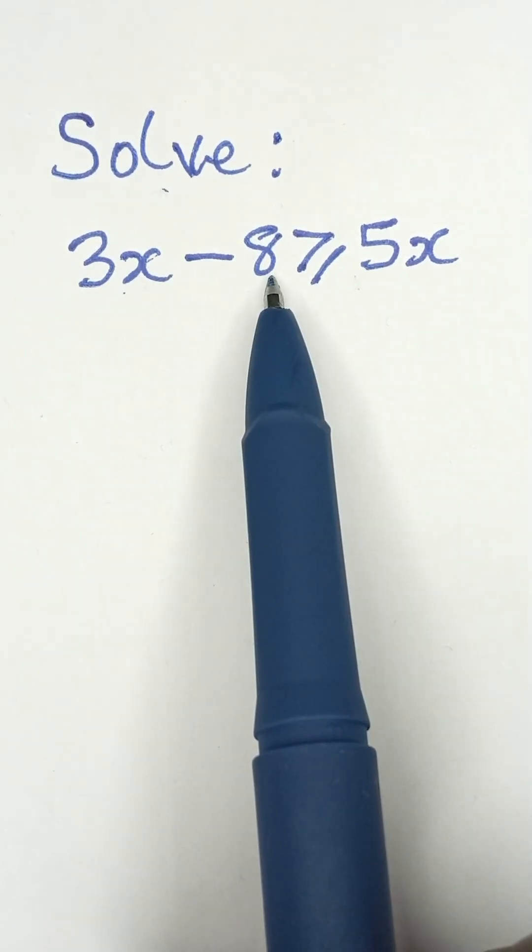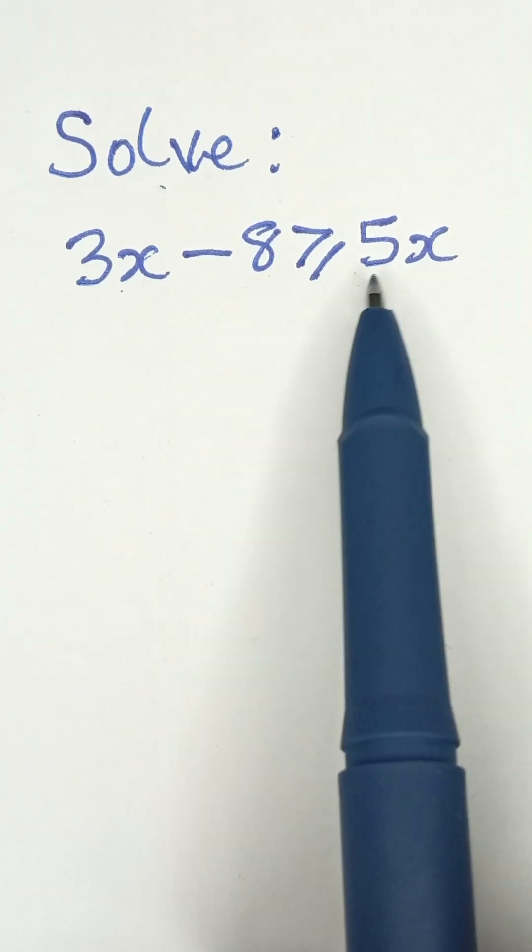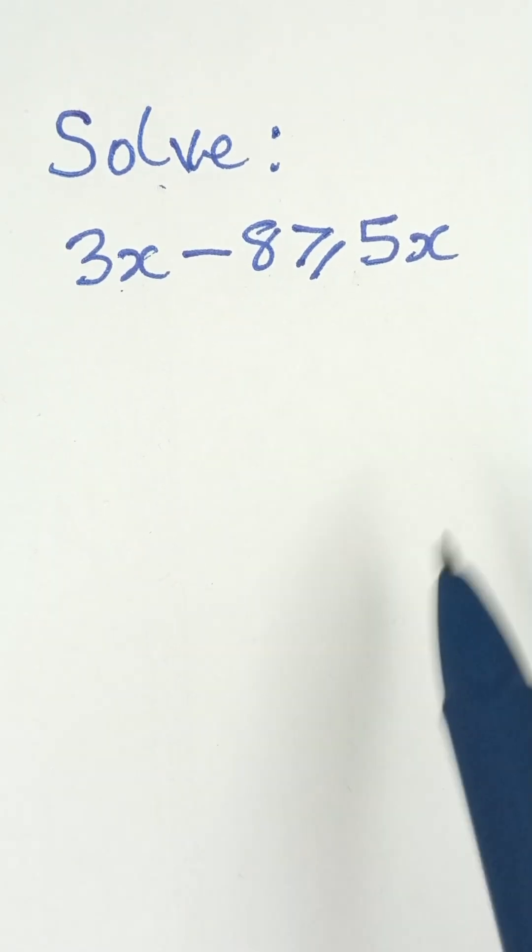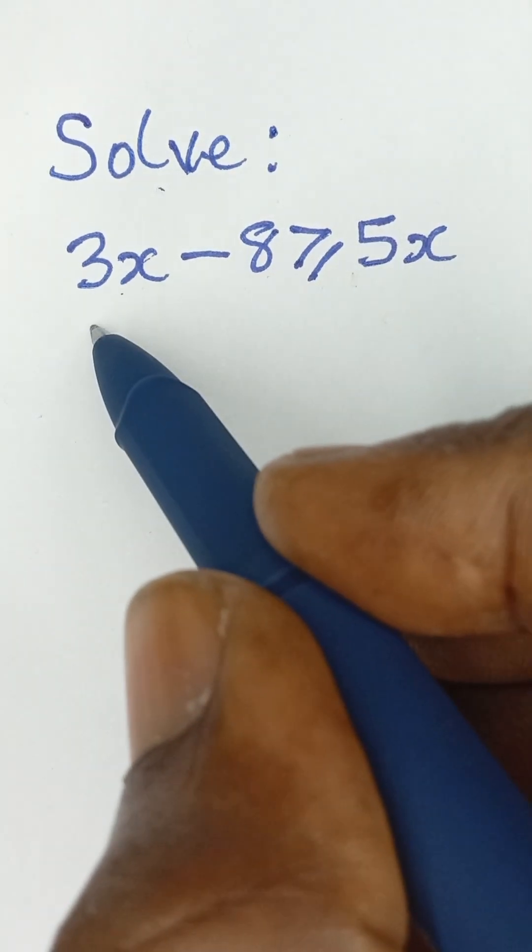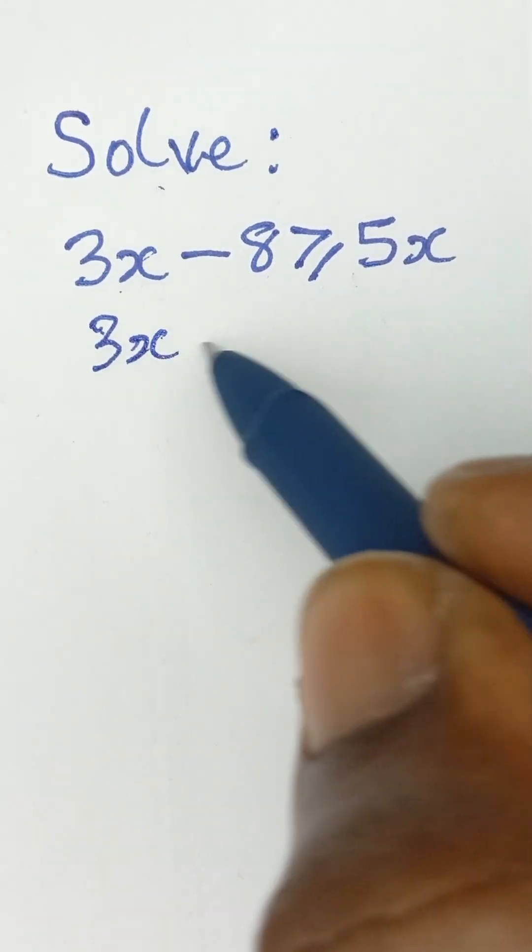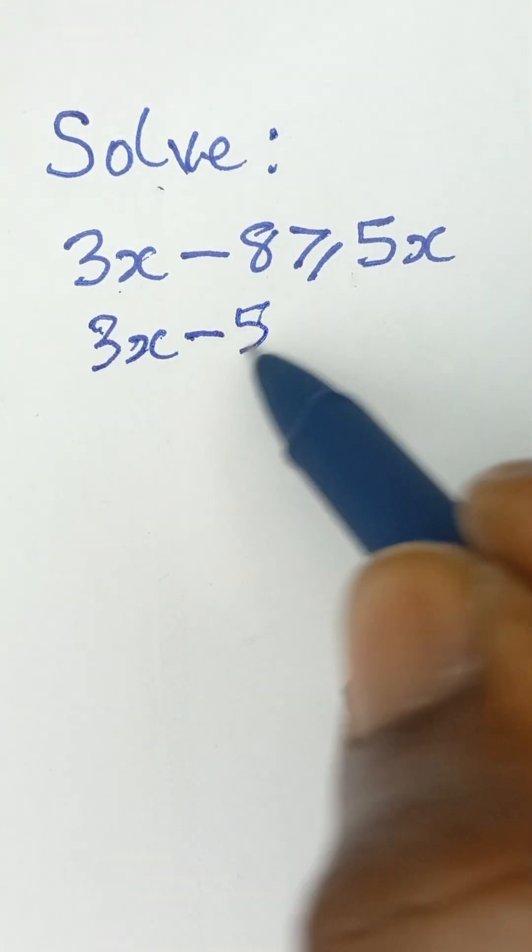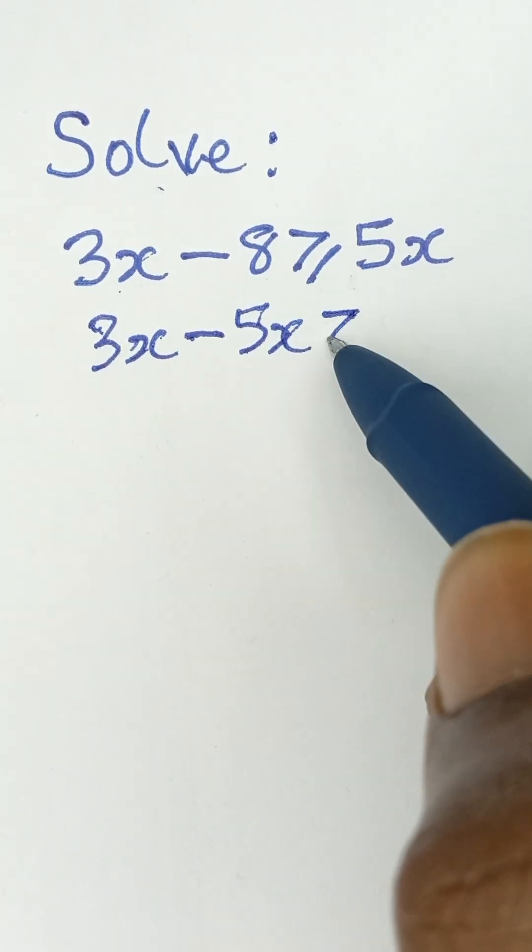Solve 3x minus 8 is greater than or equal to 5x. What we simply need to do here is to collect like terms. But there's something we have to be careful about here so that we'll not get the answer wrong.